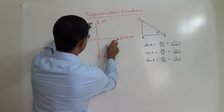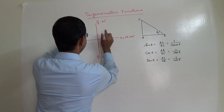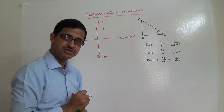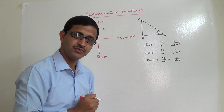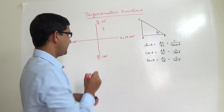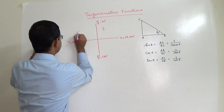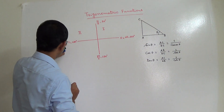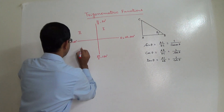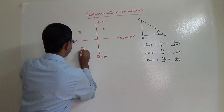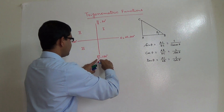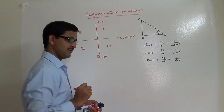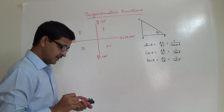Any angle between 0 and π/2 is in the first quadrant. Any angle between π/2 and π is the second quadrant. Any angle between π and 3π/2 is the third quadrant. And any angle between 3π/2 and 2π is the fourth quadrant.